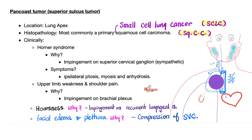What is Pancoast tumor? It's a superior sulcus tumor, right here near your clavicle — usually lung cancer in the lung apex, and this could be small cell lung cancer or squamous cell lung cancer. Complications include Horner syndrome. Why? Because you impinge on the stellate ganglion, also known as the superior cervical ganglion, which is sympathetic, causing ipsilateral Horner syndrome, which is ptosis, miosis, and anhidrosis. Moreover, I can press on the brachial plexus, leading to upper extremity weakness on the same side.